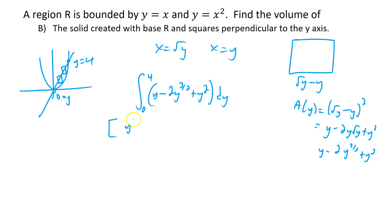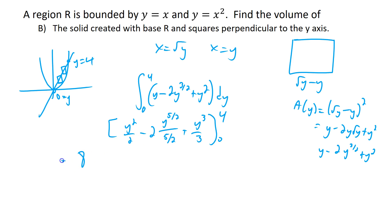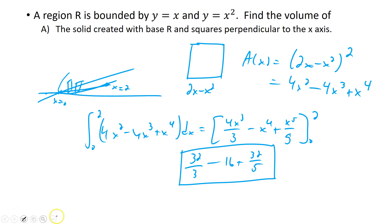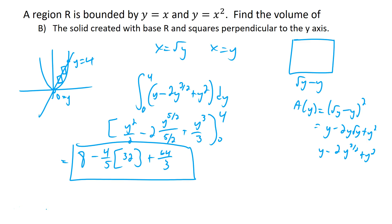Plugging 4 in: 16/2 is 8, minus 4/5 times 32 (since √4=2, 2⁵=32), plus 64/3. This is definitely not going to be the same as the first result. It's important to note that integrating with perpendicular-to-x versus perpendicular-to-y can give different values, because the shapes are either wider or narrower, giving a different total volume.